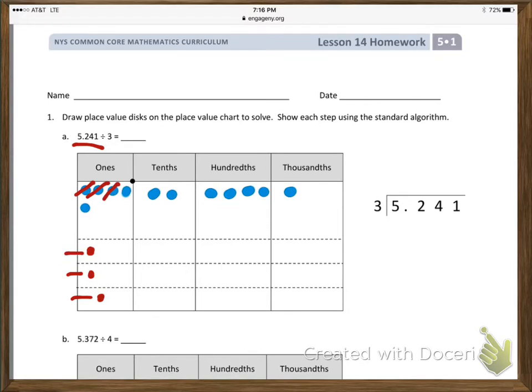we need to unbundle each of them and turn them into tenths. So 1 one equals 10 tenths, which we can show by crossing off 1 one and putting it in the tenths column, putting the 10 tenths in the tenths column, and then doing it again for this last remaining one.